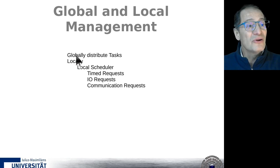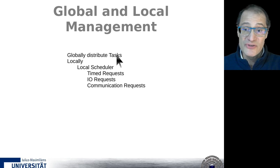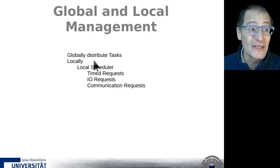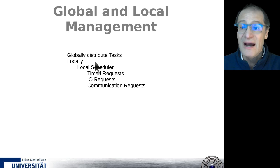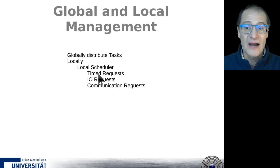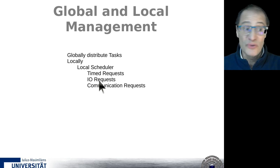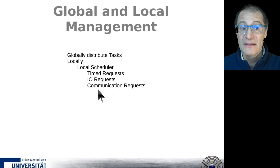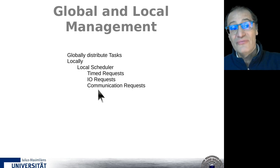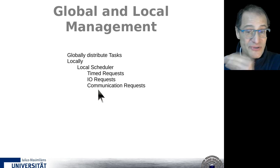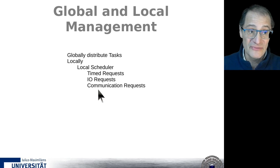Knowing all this, we can distribute tasks — which task can be executed on which node. Each node then looks at its assigned tasks and takes local decisions according to time requests, input/output requests, available data, and communication requests. But we are missing something: we must also consider whether other tasks on other nodes are waiting for messages from one of these tasks. This is more difficult — it could be handled as a communication request.